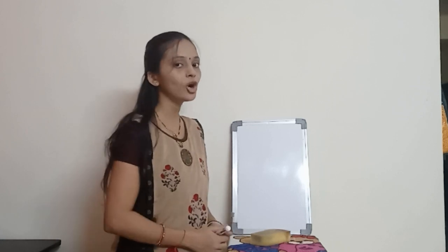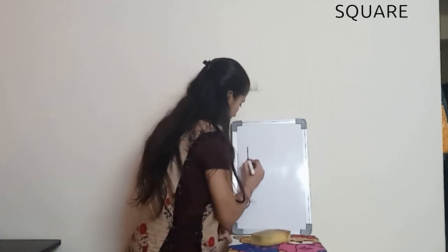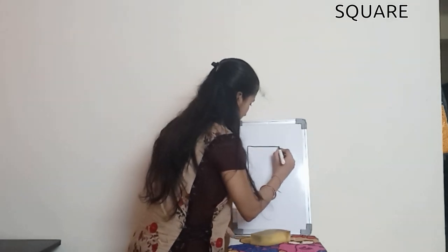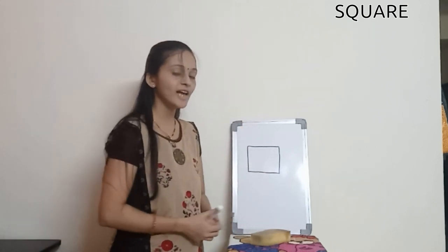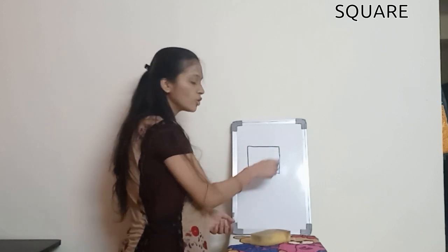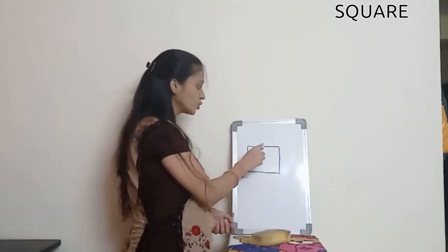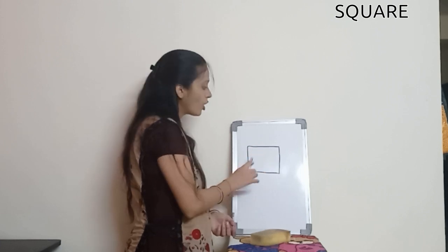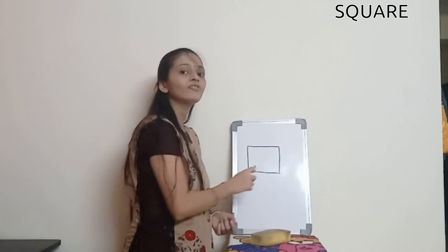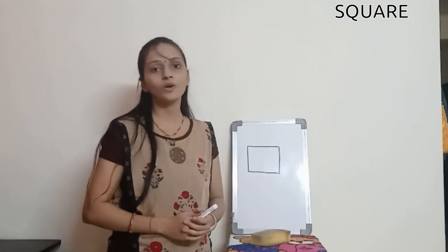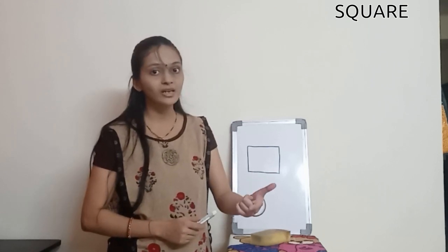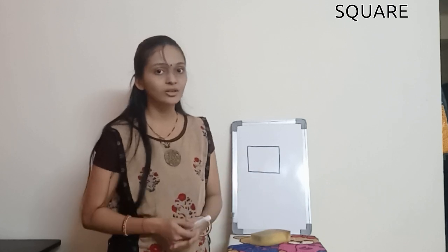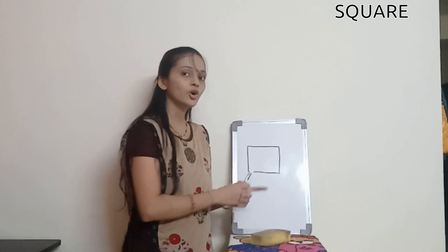So kids, let us start with the first shape, that is a square shape. Let me draw on the board. This is a square shape. As you can see, this shape has 4 sides — let us count: 1, 2, 3 and 4. All these sides of the square shape are of equal size. Now let us recollect some of the objects that are of square shape. We have clock, table, photo frames and so on.